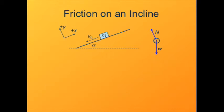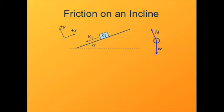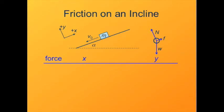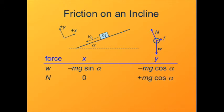What happens if the object is sliding downhill? The analysis is pretty much the same, with the exception that the direction of the force of friction is reversed — it now opposes downhill sliding, so friction points uphill, in the plus x direction. The weight breaks down the same way; the normal force is the same. Reversing friction's x component and combining terms gives a net force of minus mg times (sine alpha minus mu cosine alpha), where negative x is the downhill direction.